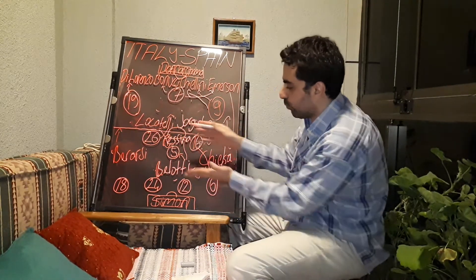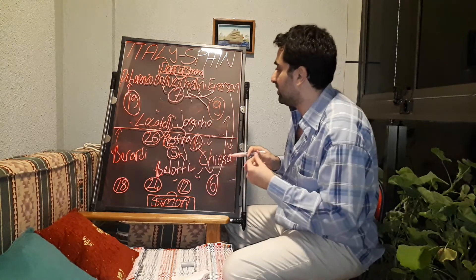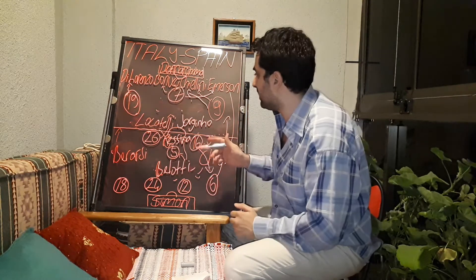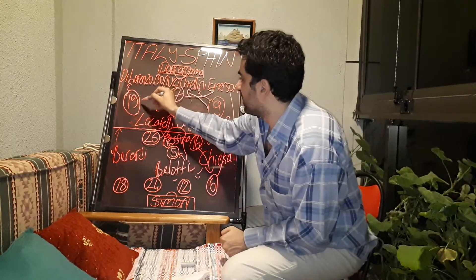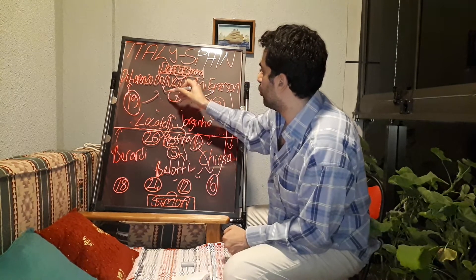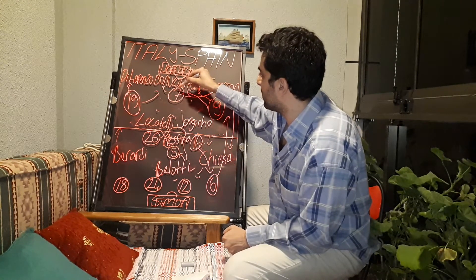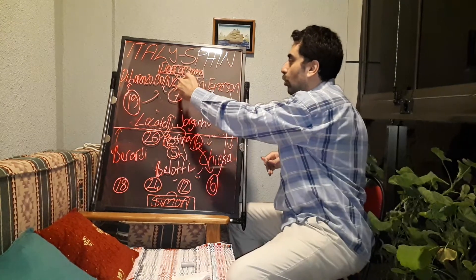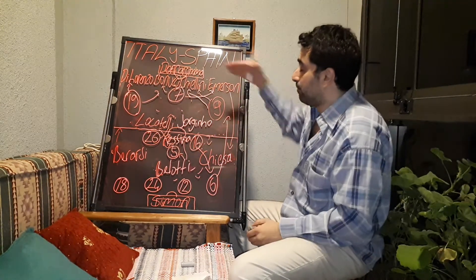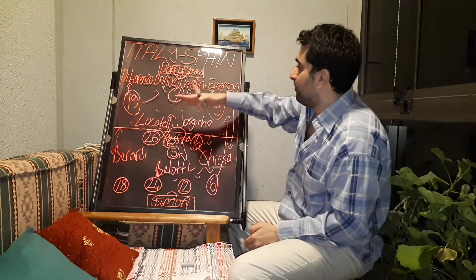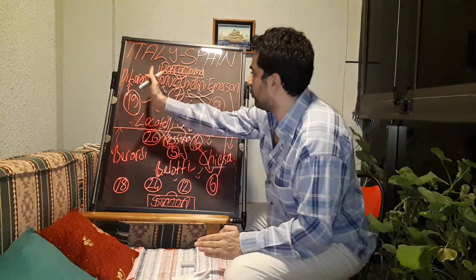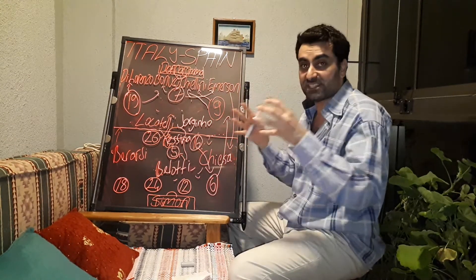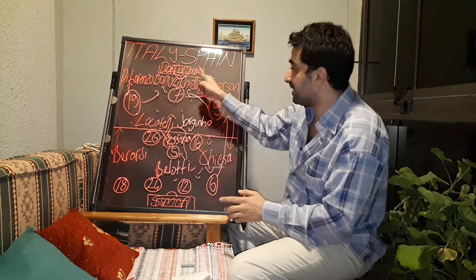Spain found the goal through Alvaro Morata. Morata tucked infield and his pass went between Bonucci and Chiellini — Morata got into the Italy box and scored the goal for Spain. At the back post, when Spain developed attacks from the left, Spain found one more goal position but missed that clear chance.